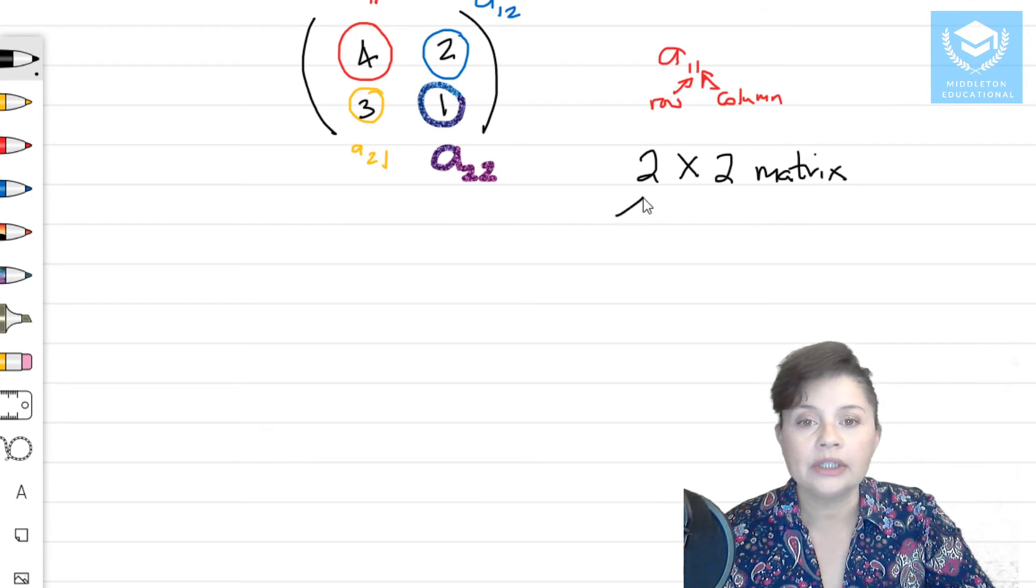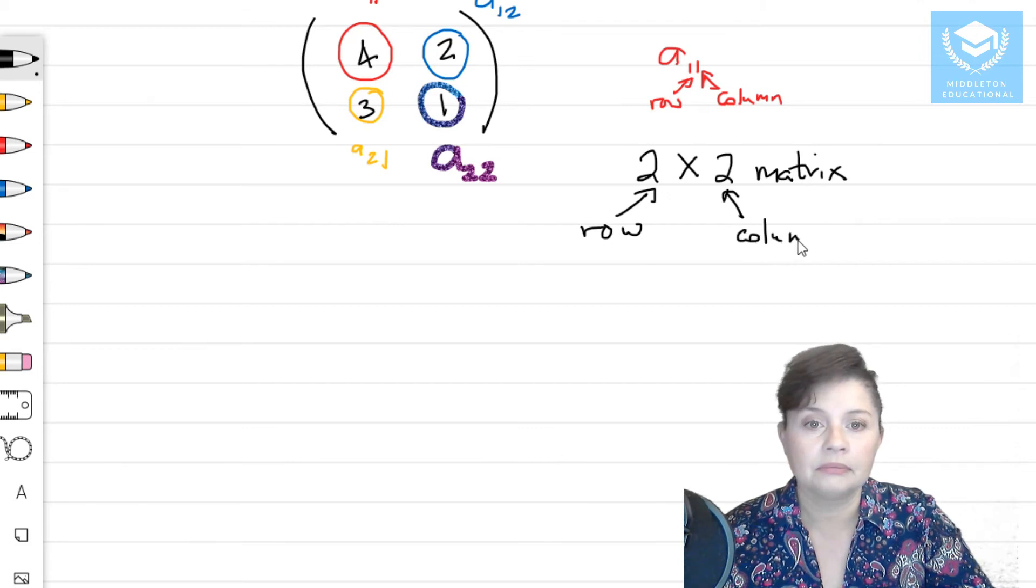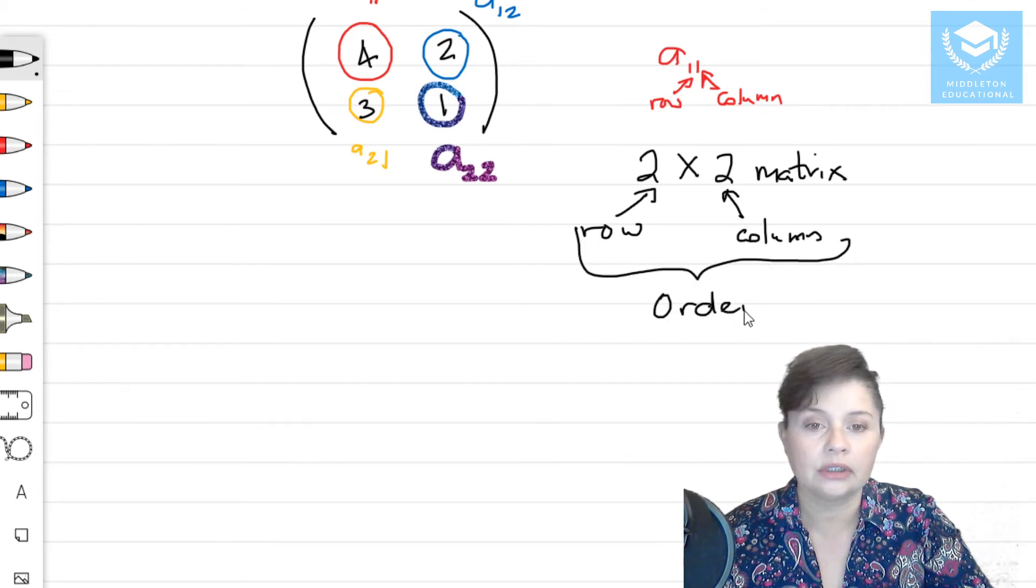And we always write the row number first, and then the column. Right? And that is what we call the order of the matrix.